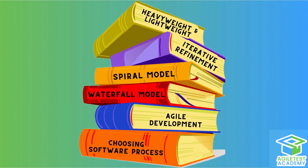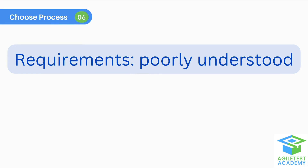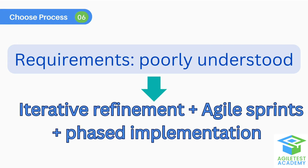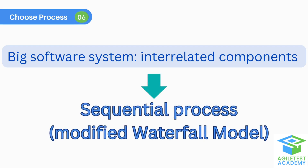We now move on to how to know which software process is suitable for your project or your team. If the requirements are poorly understood or expected to change, use iterative refinement, agile sprint, and phased implementation. If the big software system has many interrelated components and you want to avoid major changes to the design during development, you should use a sequential process, which is a modified version of the waterfall model.